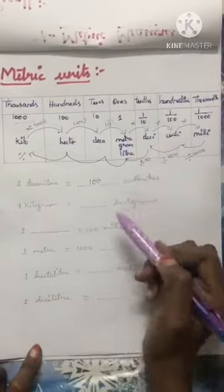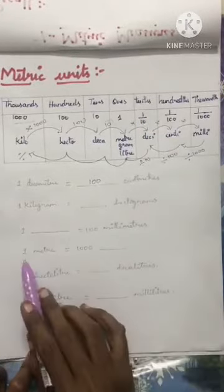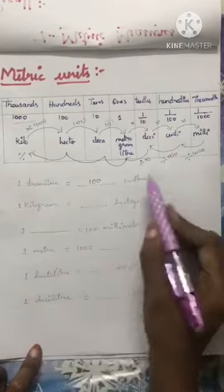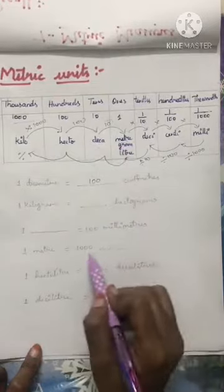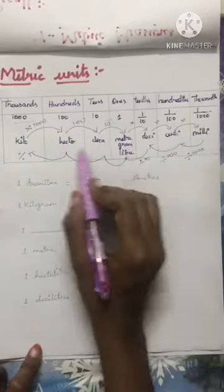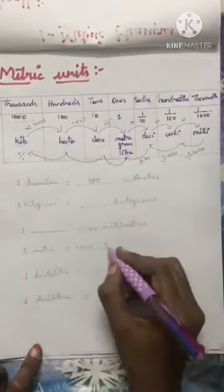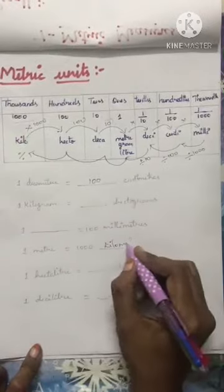Next, one meter is equal to thousand... from one meter to thousand kilometer, like that we have to see.